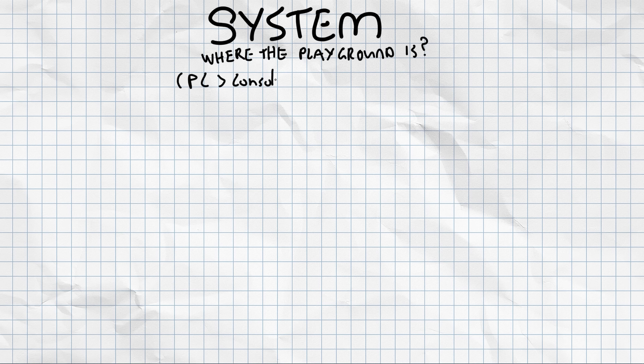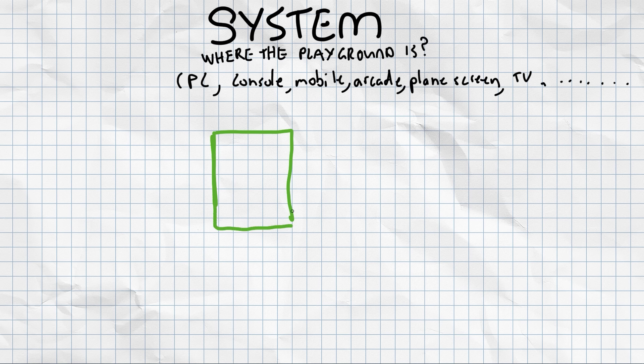And that takes us to lucky last, which is system. So if we're still talking about the playground analogy, this is basically where the playground is, what country it's in, what city it's in. Because this totally changes everything about the playground or everything about the game depending on what it's played on. Is it a PC, a console, a mobile? Is it on a playing screen? Is it on a TV? Is it on a Tamagotchi? Almost any electronic device can play a game. So let's just narrow it down for two for now.